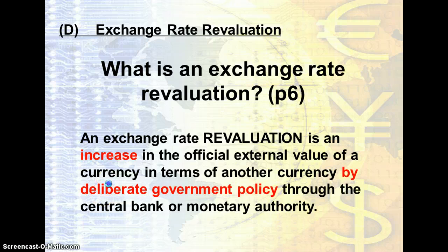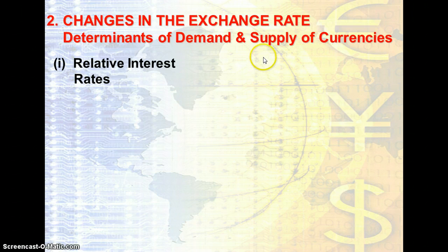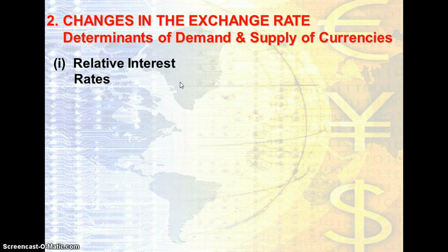What are the determinants of demand and supply of the currency? The determinants listed can be rephrased to present either a change in the demand or a change in the supply of the currency in a question. You should also recognize that some determinants will cause short-term fluctuations, while other determinants will explain a long-term exchange rate trend. The first determinant is the relative interest rate.